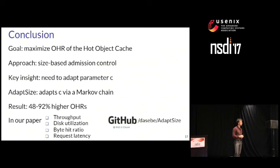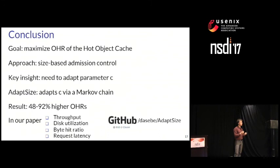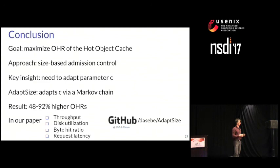A question about eviction policy: since we have different-sized objects, we discussed size-based admission, but what about size-based eviction? We simply used LRU for eviction without any changes — size is only considered for the admission component. There are eviction policies that incorporate size, but they're complicated, requiring log-n overhead per request by ordering all objects. We only looked at policies with constant-time overhead per request. Those more complicated size-aware eviction policies were proposed about 20 years ago but haven't been implemented in practice.